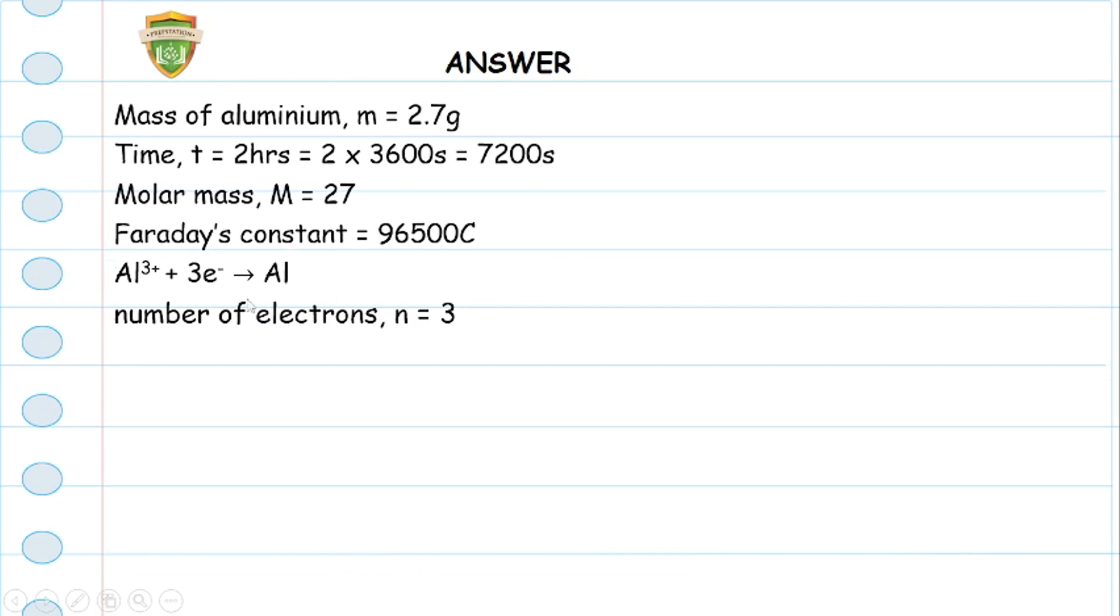The first thing we do is write the ionic equation so that we know the number of electrons we are dealing with to be able to multiply by Faraday's constant. When we do that, we find out this is three electrons. The number of electrons n is three.